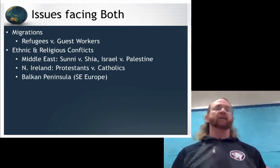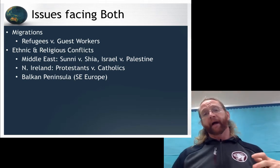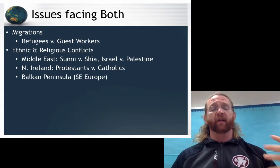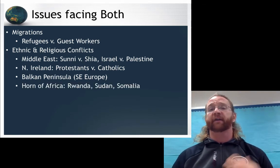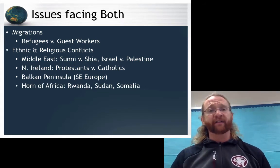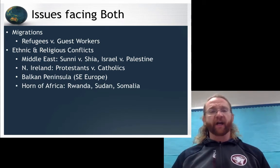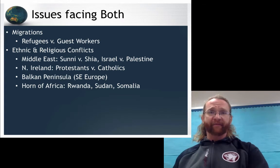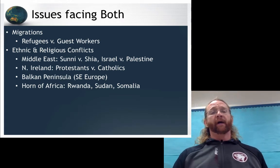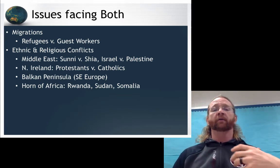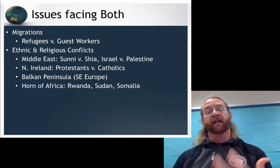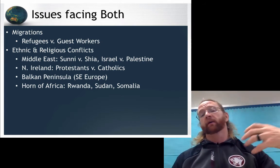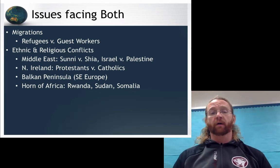The Balkan Peninsula, which we've talked about as sparking the cause of World War I, saw conflict in Yugoslavia and southeastern Europe, and still has conflict today due to the complications of many different ethnic groups living together. The Horn of Africa — the area of Africa close to the Arabian Peninsula — includes conflicts such as the genocide in Rwanda, a conflict in Sudan between Northern and Southern Sudan over control and independence, and Somalia, which we'll talk about more in class.